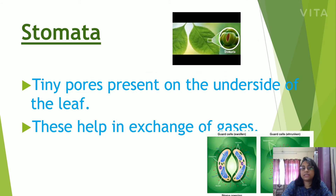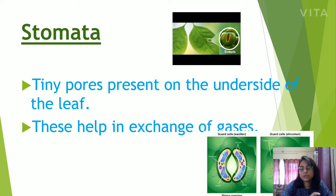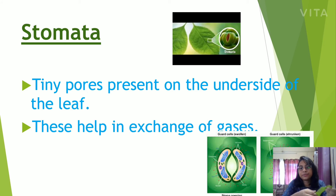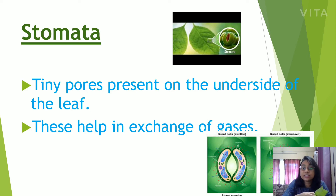Then we have stomata. Stomata are tiny pores present on the underside of the leaf. We cannot see them with our bare eyes, so we need a microscope to see stomata. They are tiny pores — tiny holes — present on the underside of the leaf.